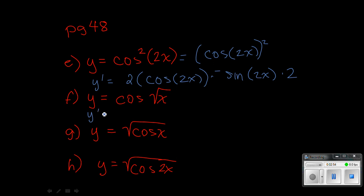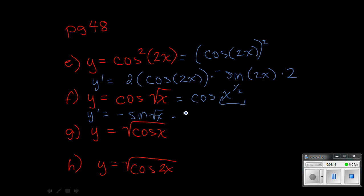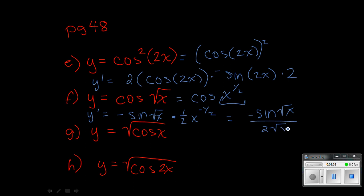On F, if you need to rewrite this just to see it, it's going to be cosine of x to the 1 half power. So the cosine would come first — that x to the 1 half doesn't happen until later. So the derivative of cosine would be negative sine. Keep that square root of x the same, and then now we multiply by the derivative of the inside, which is 1 half x to the negative 1 half. Make sure that this is times — you could simplify it to negative 1 half sine of root x times x to the negative 1 half.